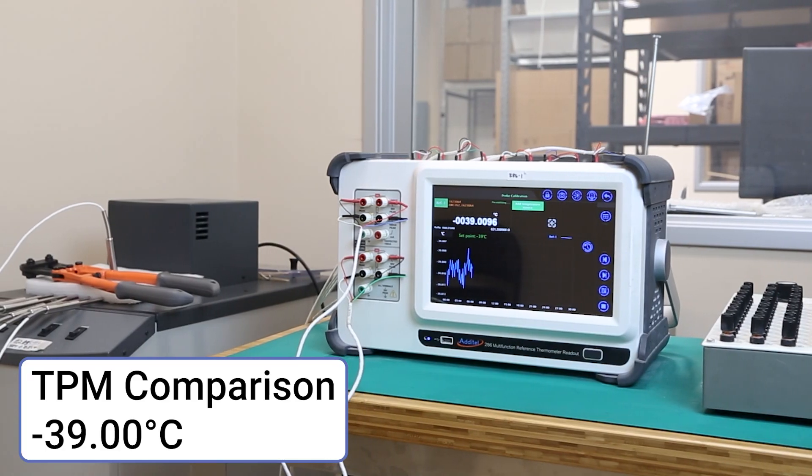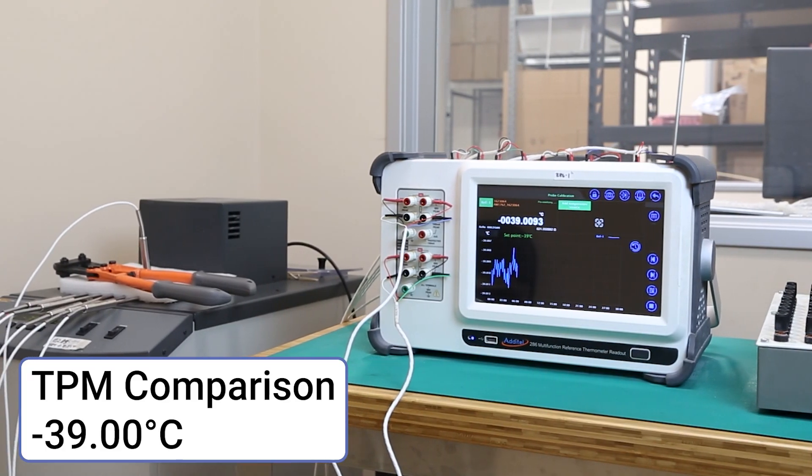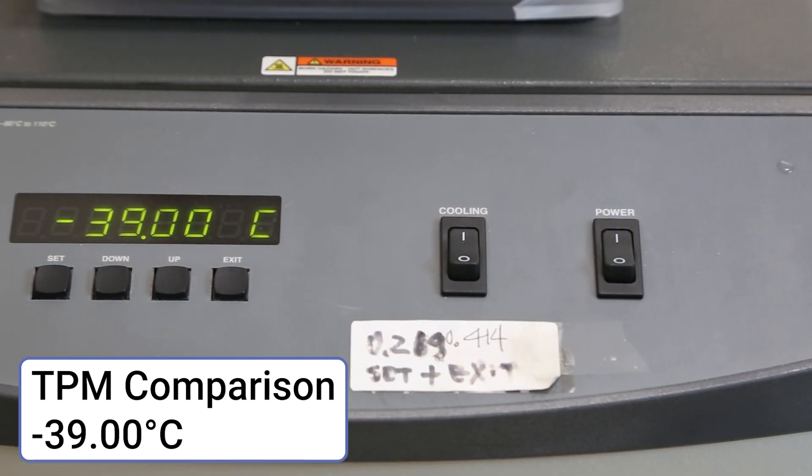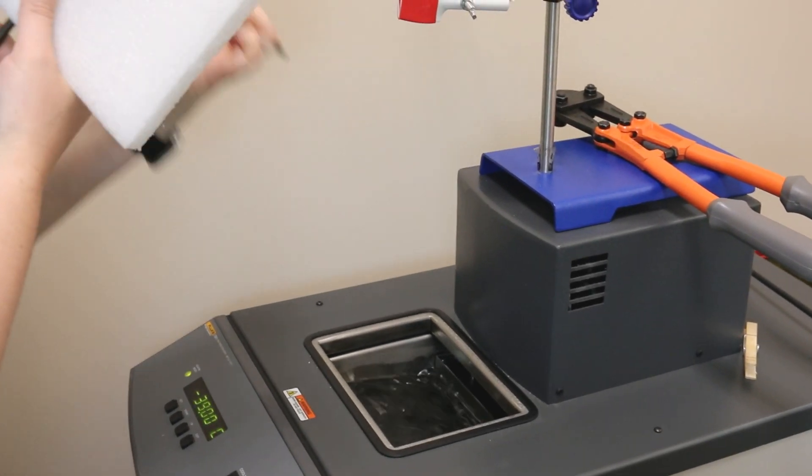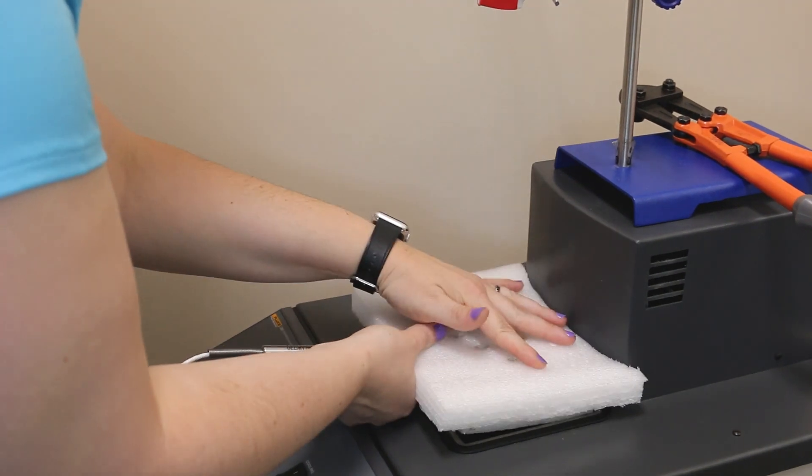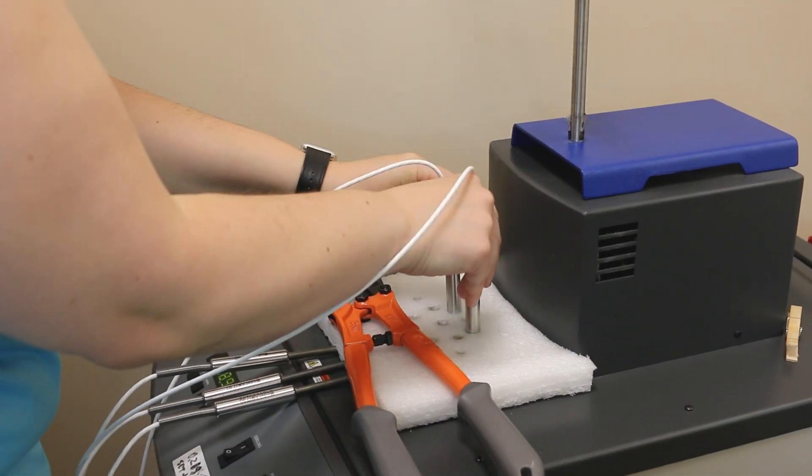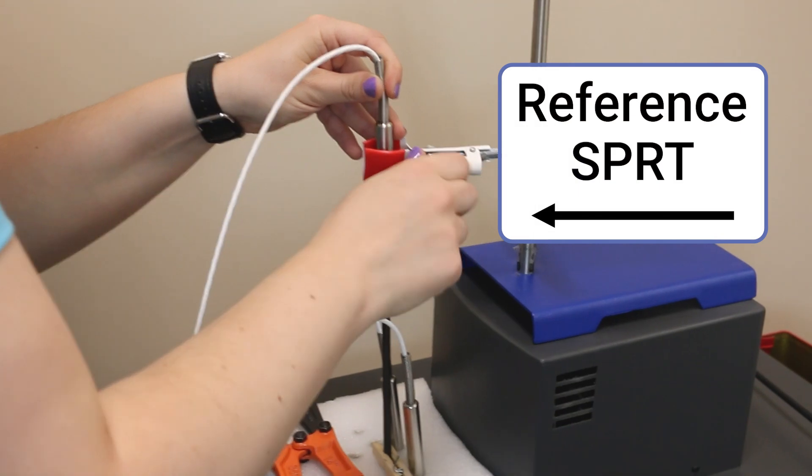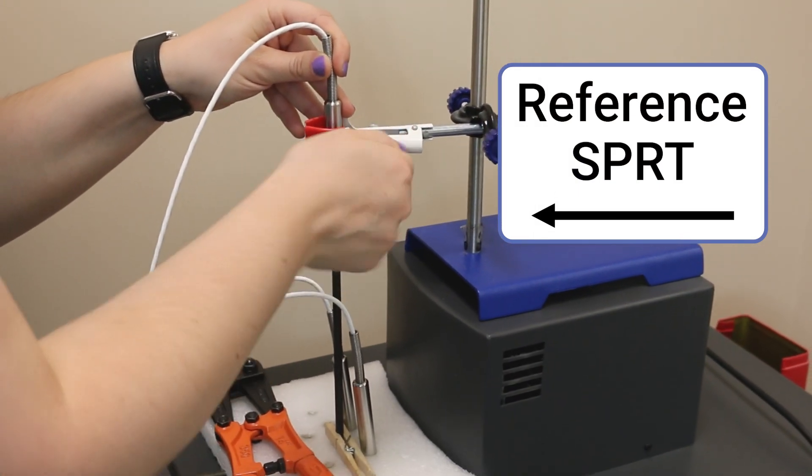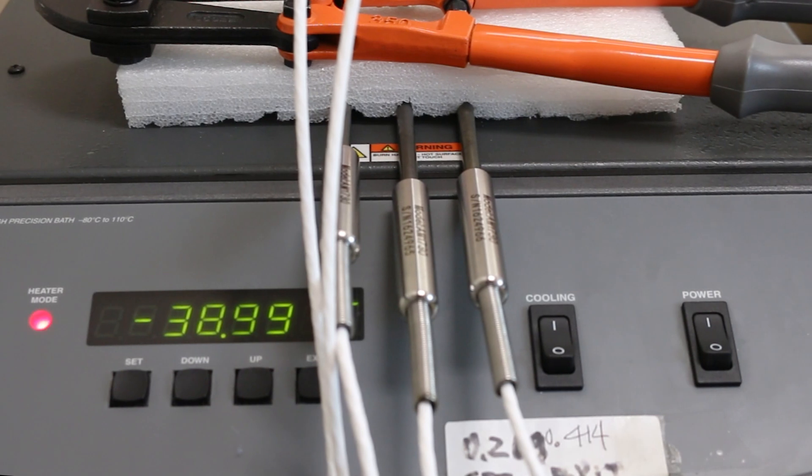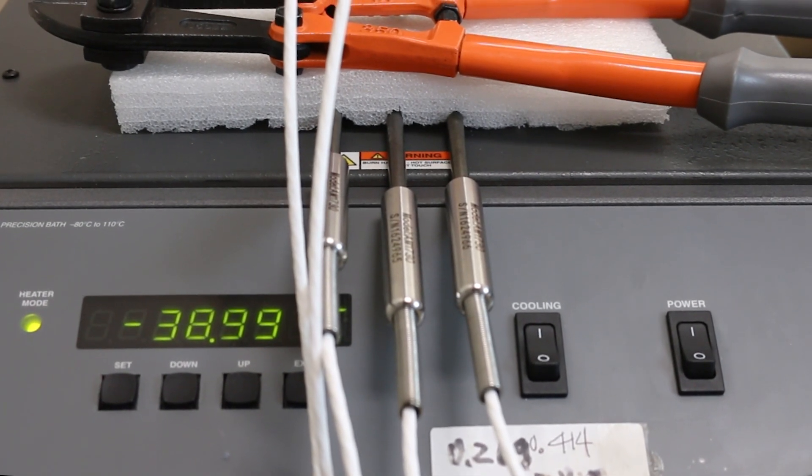Instead of a mercury cell, we will use a comparison calibration at negative 39 degrees Celsius. Comparison calibration points can be used in place of fixed points in order to complete a calibration without having the equipment to actualize fixed points. To replace the intrinsic reference, a reference SPRT must be used throughout the test, which will be compared against the DUT probe readings.